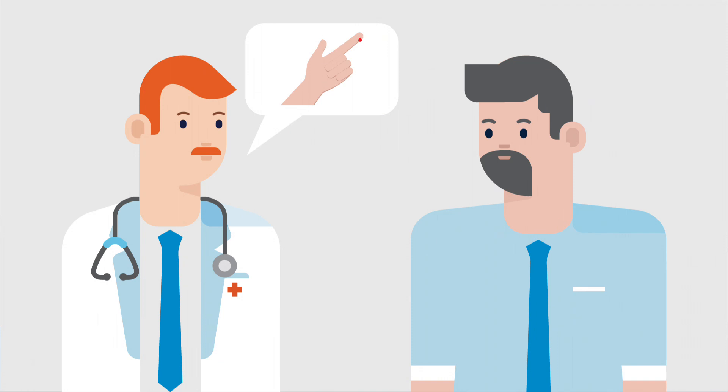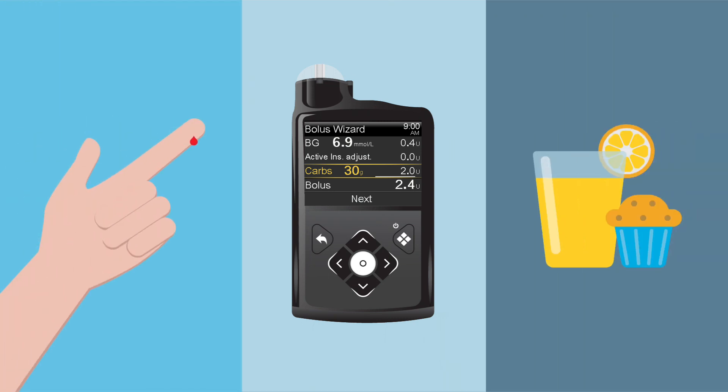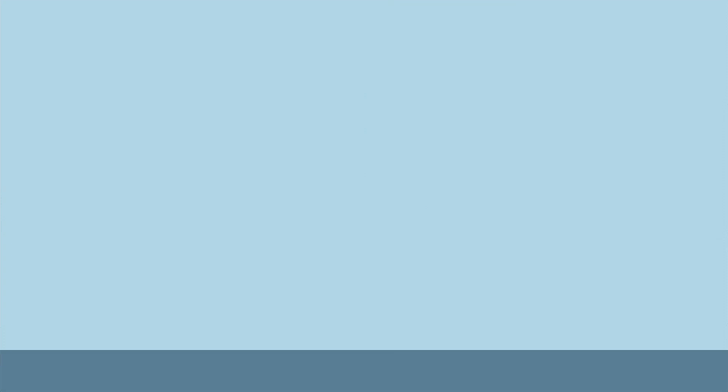The bolus wizard feature on the Minimed 770G insulin pump uses individual settings to calculate an estimated bolus based on the current blood glucose and the amount of carbohydrates about to be eaten. Before Andy can begin using the bolus wizard feature, he will need to program in the individual settings that Dr. Walsh has prescribed for him.